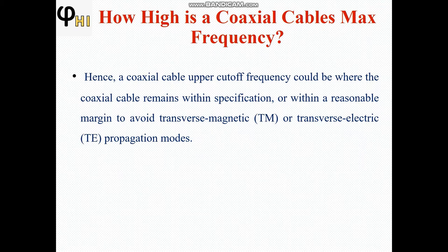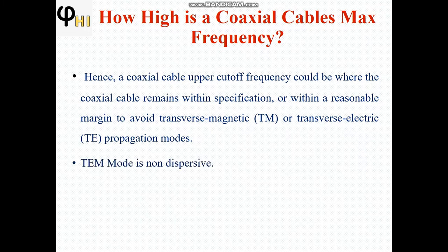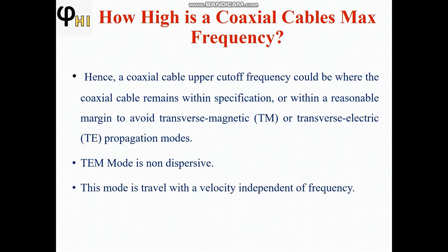The higher order modes are expressed in terms of transverse electric mode or transverse magnetic mode, and the lowest order modes are the TE11 mode and the TM01 mode. The transverse electromagnetic mode is a non-dispersive mode and travels with a velocity independent of frequency, meaning the velocity of the modes in a coaxial transmission line does not depend on frequency.